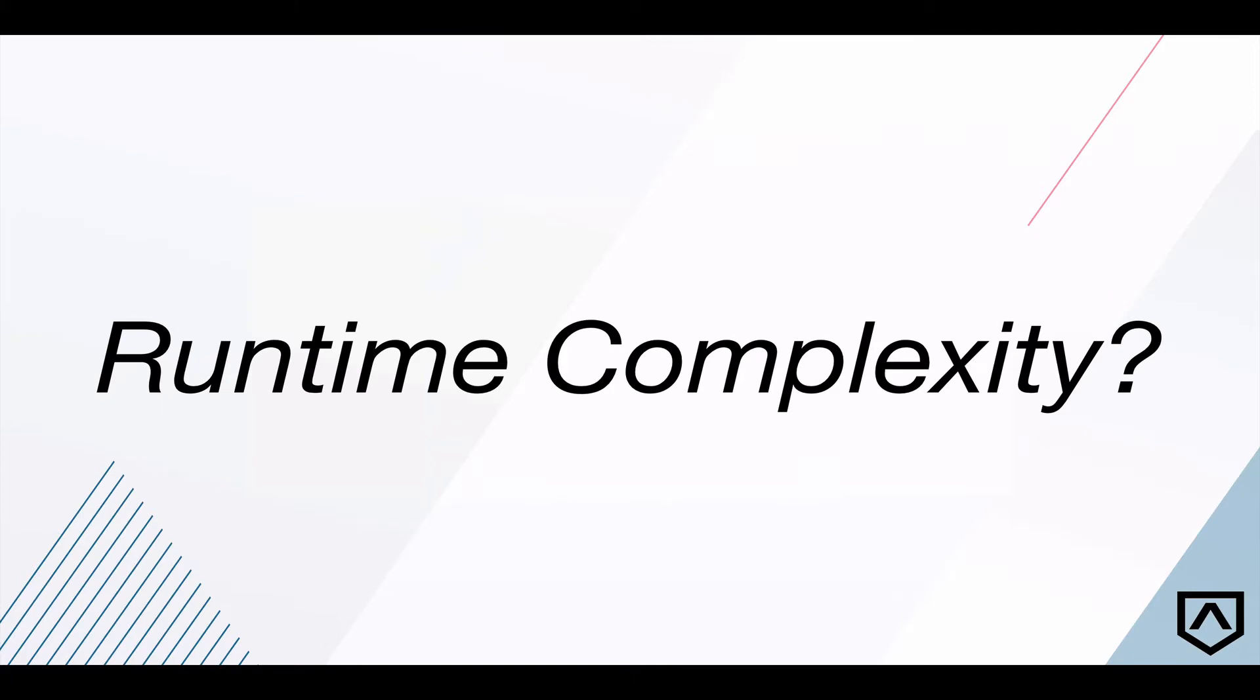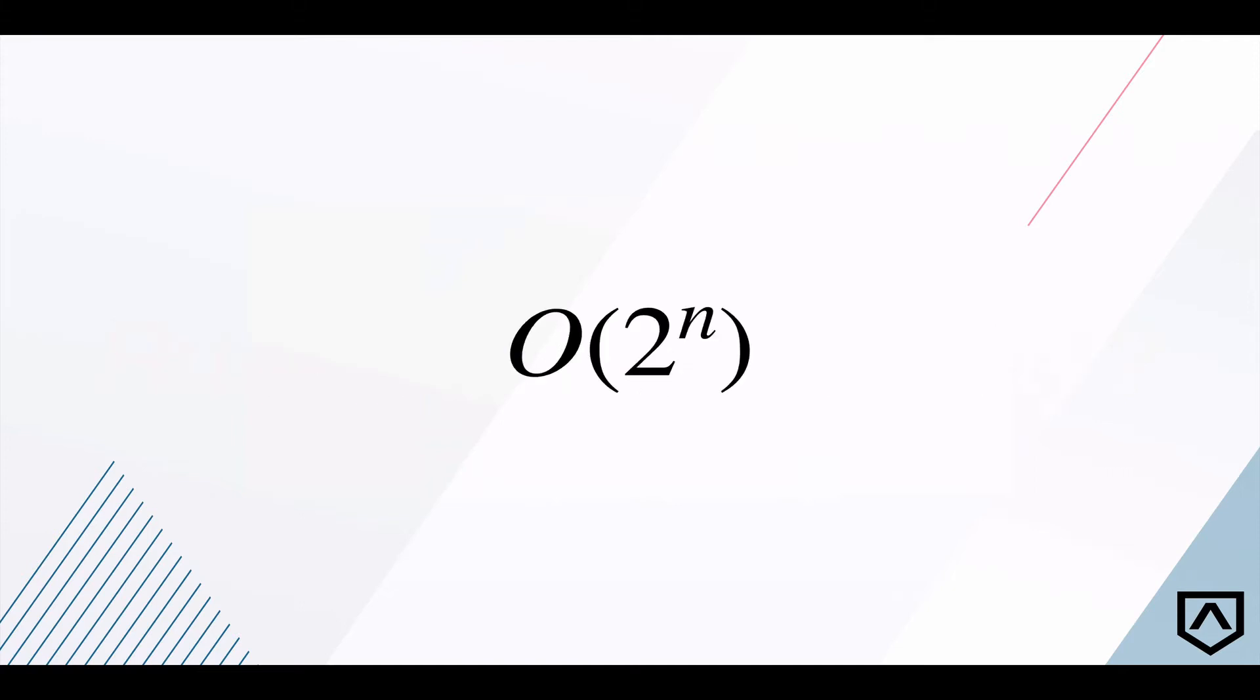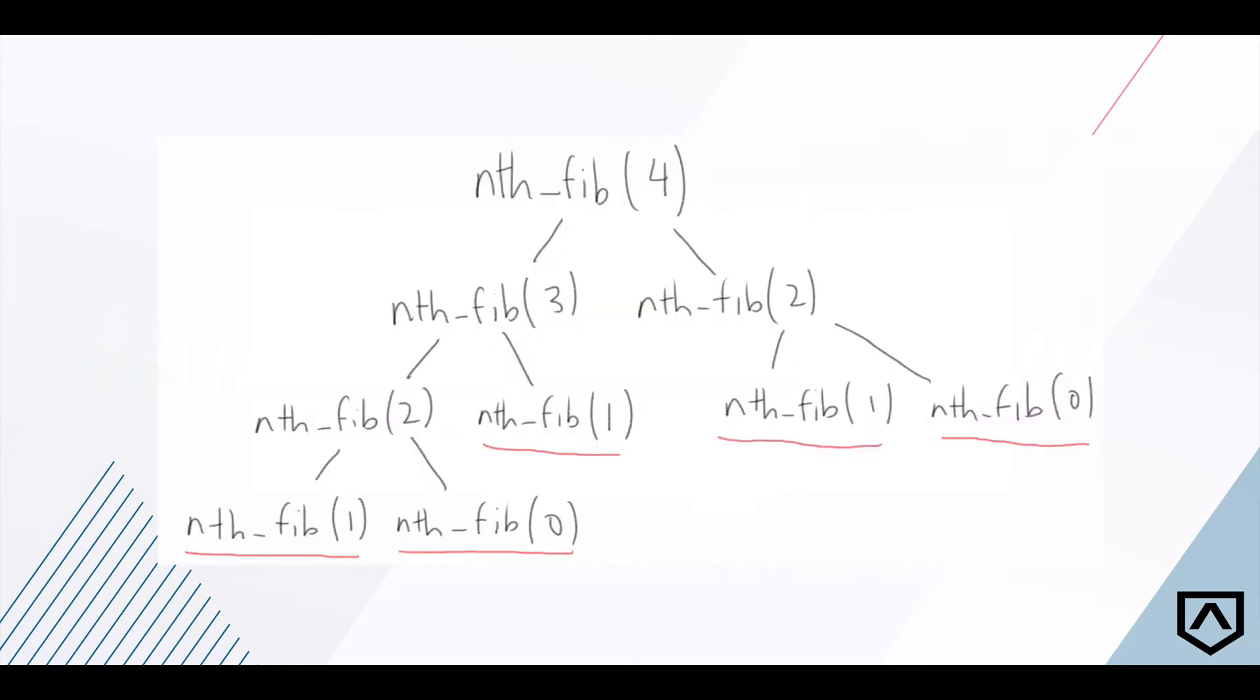To start to answer the question of why this particular implementation is so inefficient, we need to take a look at its runtime complexity. It turns out the runtime complexity of this recursive implementation comes out to O(2^n), which as you might recall is really really bad. To see how it achieves that runtime complexity visually, we can chart out all the recursive calls it might make.